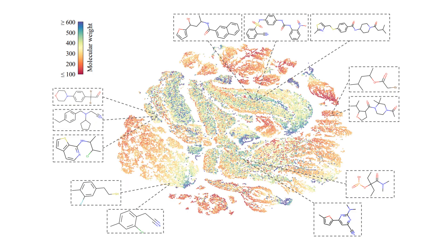Here's the fun part. They visualized the chemical representations learned by MoCLeR using t-SNE. The representations were extracted from a validation set of 100,000 unique molecules. Each point in the visualization corresponds to a molecule and is colored based on its molecular weight. We can see that molecules with similar structures and functional groups are located closely to each other in the representation space. This suggests that MoCLeR might be able to learn intrinsic connections between molecules without relying on labeled data — how fascinating!